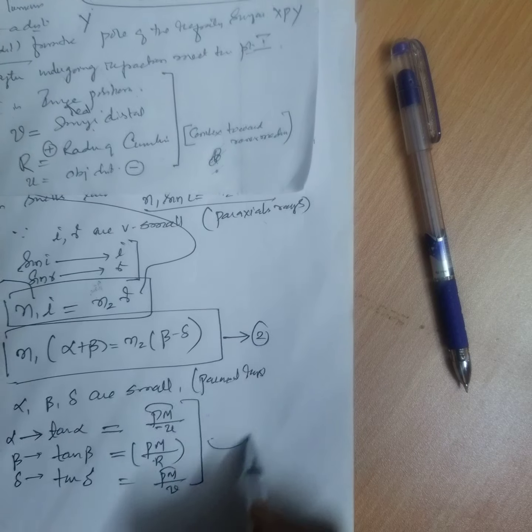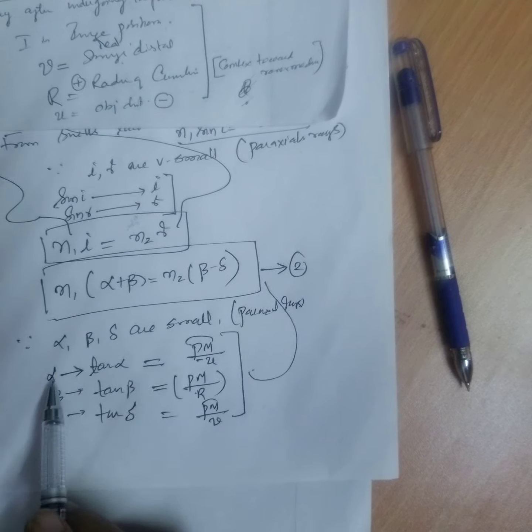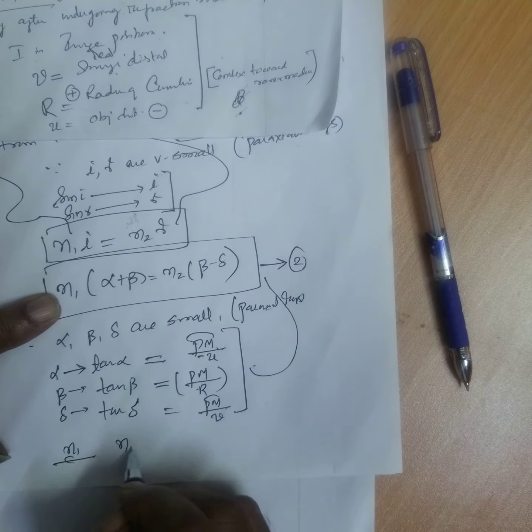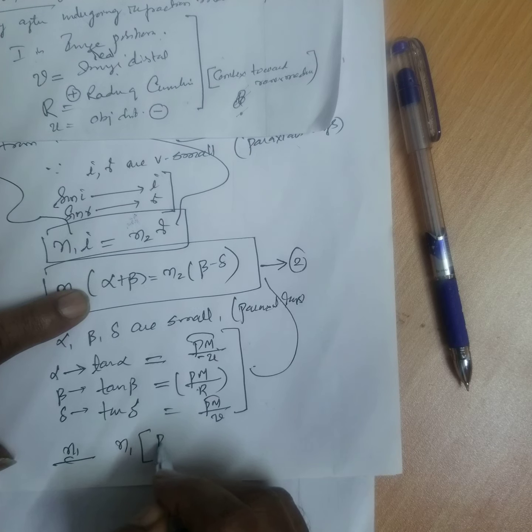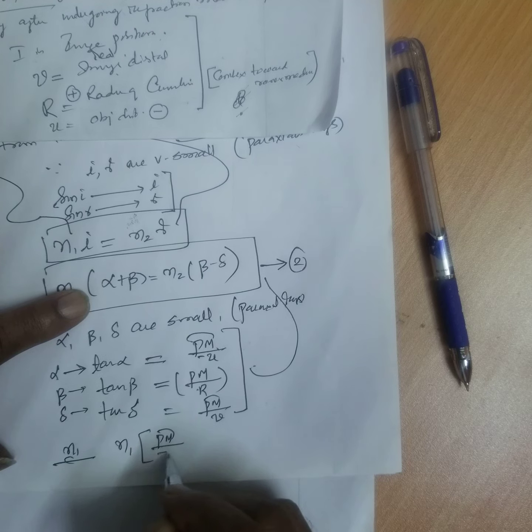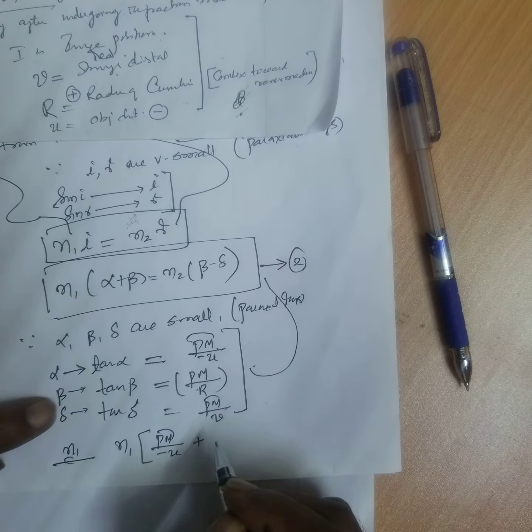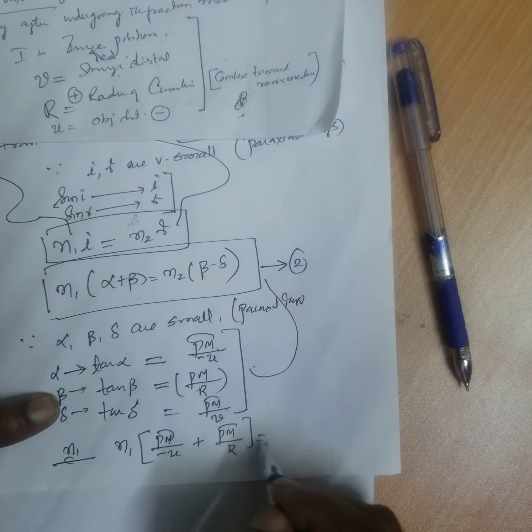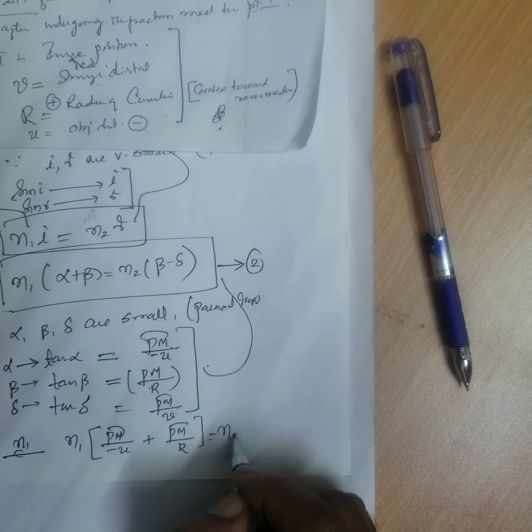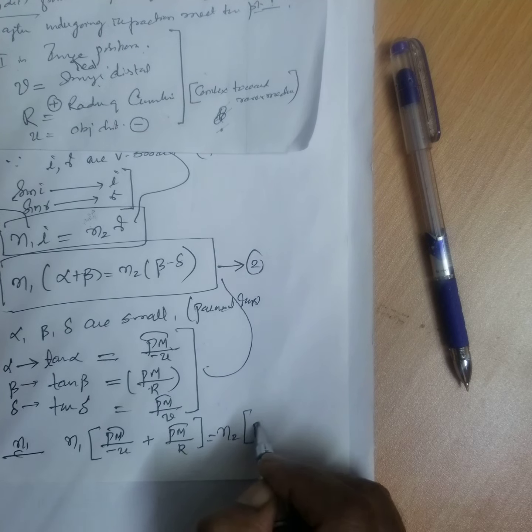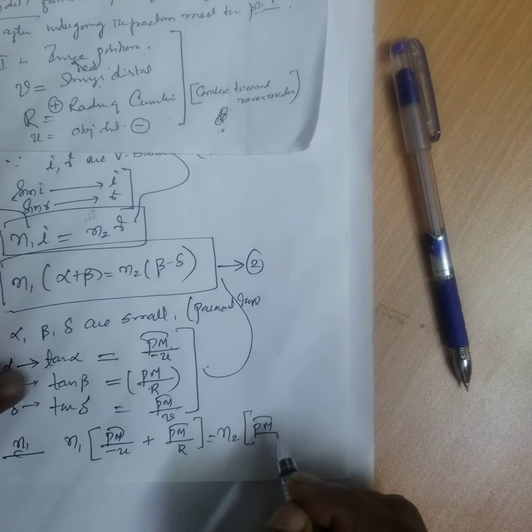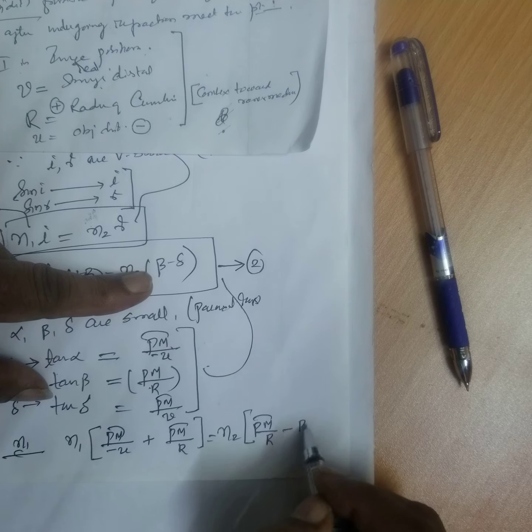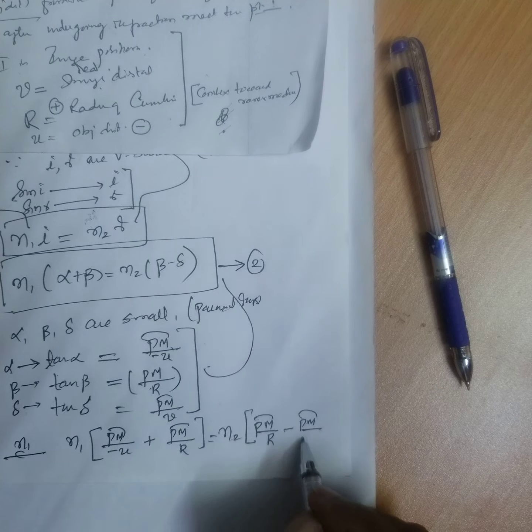This you substitute here in this equation. Alpha is replaced by what? N1, N1. Alpha is PM by minus U plus beta is what? PM by R is equal to N2 PM by beta is what? R minus PM by delta is V.